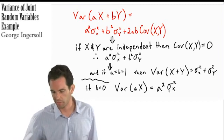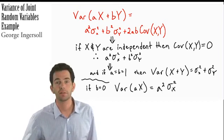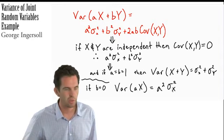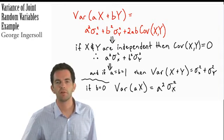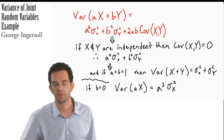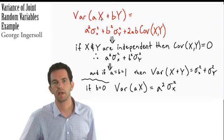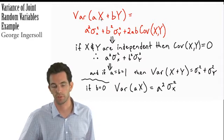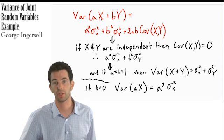Variance of ax is equal to a squared times the variance of x. I want to distinguish between when we have several quantities of a single random variable, like ax, versus when we have multiple random variables — several different events.